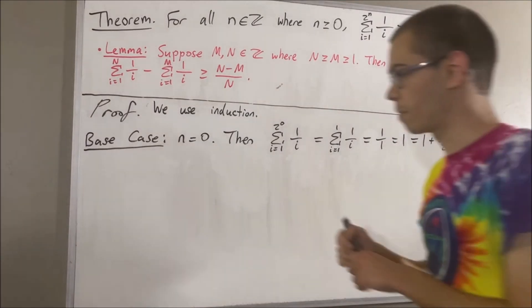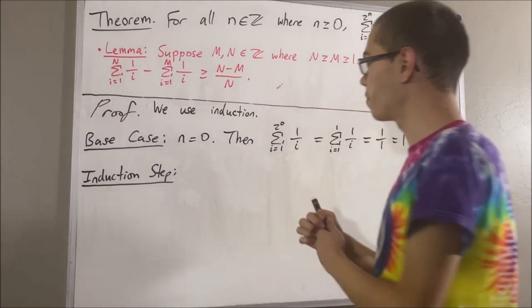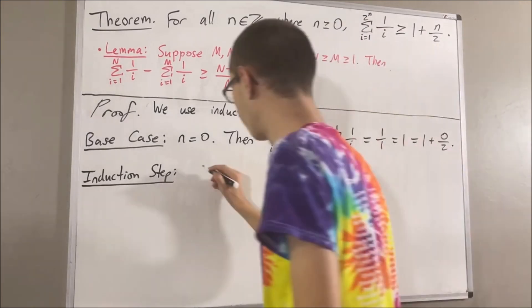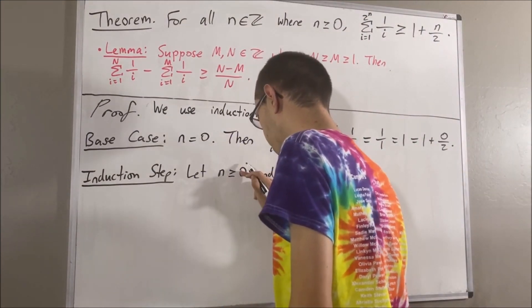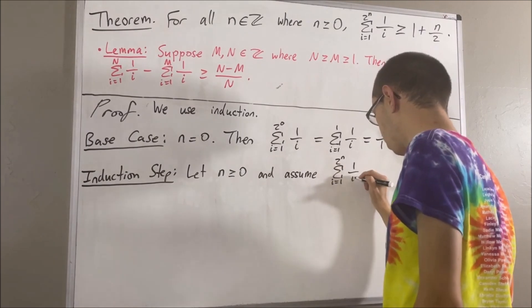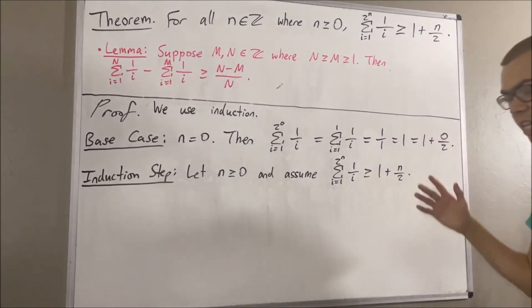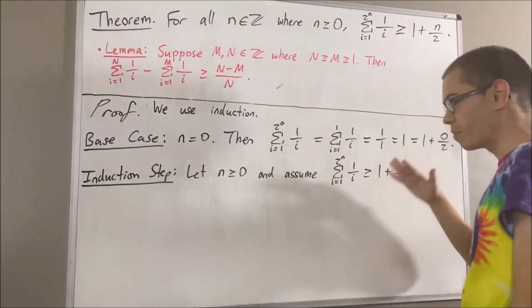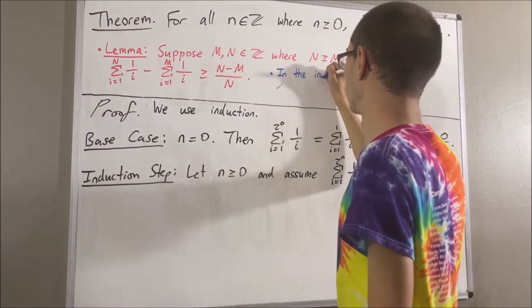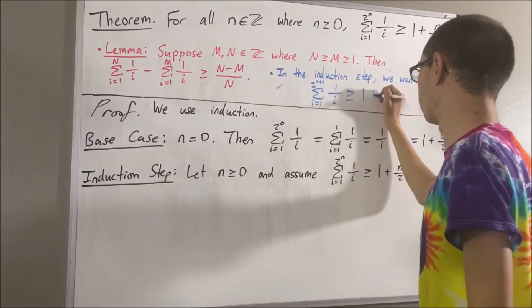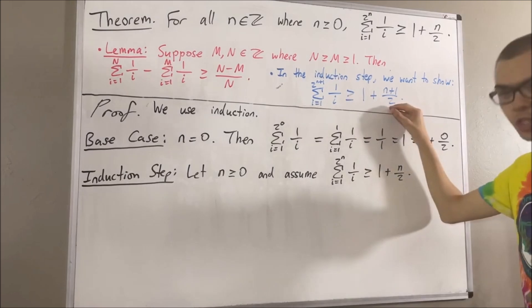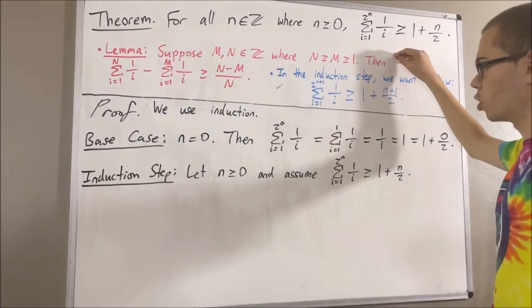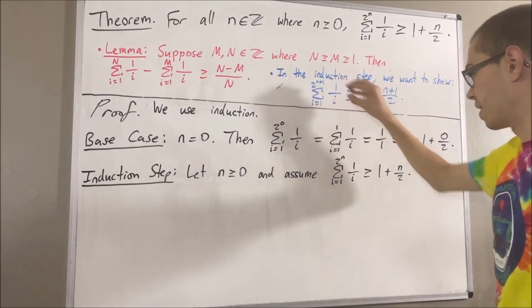Now let's move on to the induction step. In the induction step, we give ourselves an arbitrary integer n greater than or equal to 0 where the statement is true. The whole goal of the induction step is to show that this is also true for n plus 1. Now, let's apply our preliminary result. We're going to write out the sum up to 2 to the n plus 1 minus the sum up to 2 to the n.